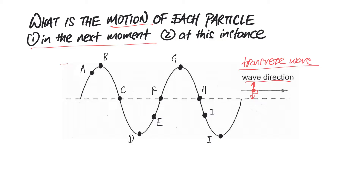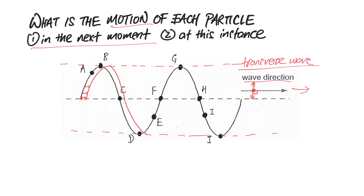The first thing to do is draw a horizontal line linking all the crests and troughs. This serves as a guiding line so that when I draw the new position of the wave, I know where the highest and lowest points will be. Since the wave is moving to the right, the whole wave shifts to the right in the next moment — every single point shifts by the same amount. The wave in red is the new position of the wave the next moment.